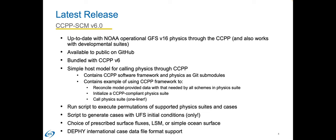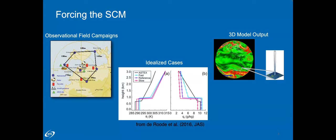The latest release is version 6.0, which is up to date with NOAA's operational GFS version 16 physics. The code is available on GitHub and was bundled with the last CCPP version 6 release. This code contains CCPP physics and CCPP framework as submodules.